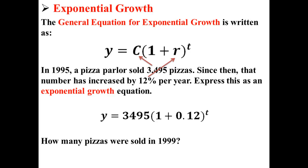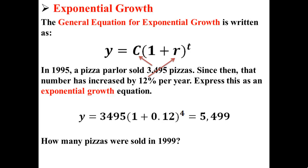Now we can ask a question: how many pizzas were sold in 1999? Well, 1999 is four years after 1995, so we simply plug in 4 for t. y equals 3,495 times 1 plus 0.12 to the fourth power, which equals 5,499. So using the general equation for exponential growth, we found that in 1999, 5,499 pizzas were sold.